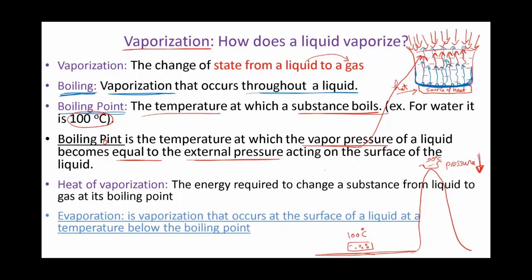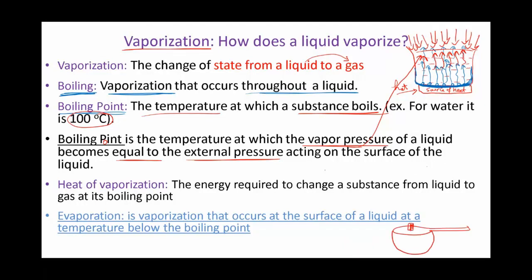Also, if you increase the pressure over the liquid — for example, if you have a pressure cooker — it tightens and isolates the liquid inside. Due to the vapor inside, this increases the pressure on the surface of the liquid. When you increase the pressure, the boiling point increases. So the boiling point inside the pressure cooker might be 120 degrees Celsius or more — not 100 anymore. The more the pressure, the higher the boiling point. The less the pressure, the lower the boiling point.